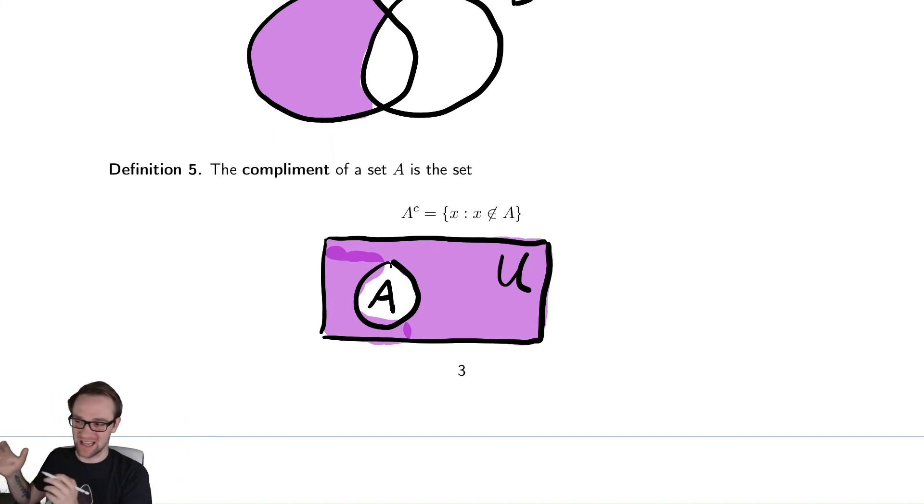It's not going to contain the word cat or the idea of zugzwang, which is a thing in chess, I believe, or something like that. Or it's a German word. I don't know. It doesn't contain these things that aren't numbers. You have some concept of the universe in which your things come from. That is what the complement is.